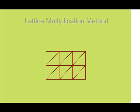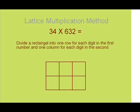Today we're going to look at the lattice multiplication method. Say we wanted to multiply the numbers 34 by 632. We would need to start by creating our lattice. To do so, we would start by creating a rectangle. This rectangle would need to have one column for each digit in our first number and one row for each digit in our second number.